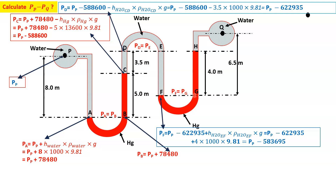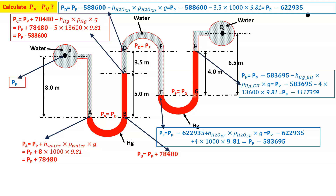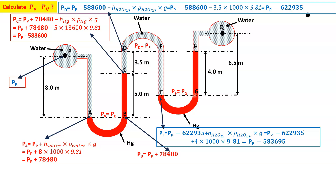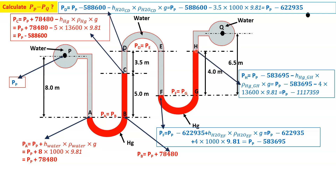From G going upward to H, pressure decreases. PH = PP − 583695 − H_GH × ρ_Hg × g = PP − 583695 − 4 × 13600 × 9.81, which gives PH = PP − 1117359.